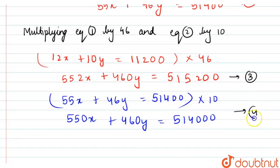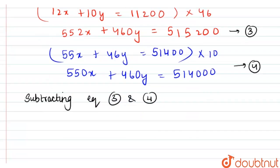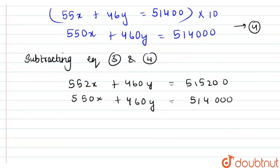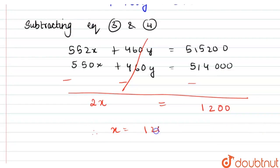Subtracting equation 4 from equation 3: 552x + 460y = 515200 minus 550x + 460y = 514000. The 460y terms cancel. We get 552x − 550x = 515200 − 514000, so 2x = 1200, therefore x = 600.